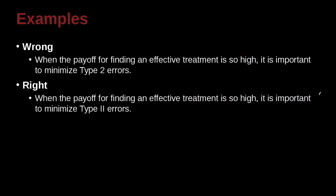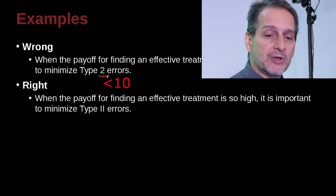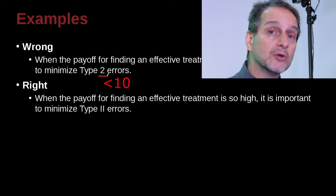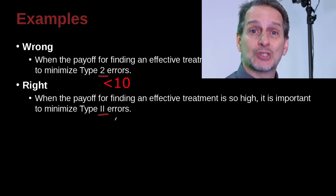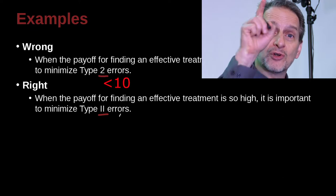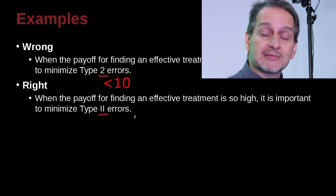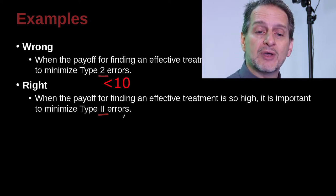When the payoff for finding effective treatment is so high, it is important to minimize type 2 errors. Now here the number is 2, so this seems okay — 2 is less than 10, and it's not a series of numbers. So why would we not just go ahead and use the number 2? Well, in this case, because it's a Roman numeral II — two vertical lines — that's the way we represent type 2 error.